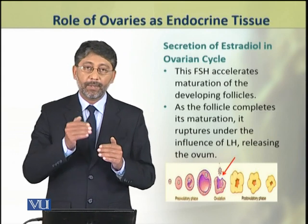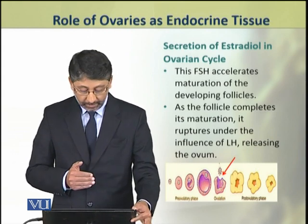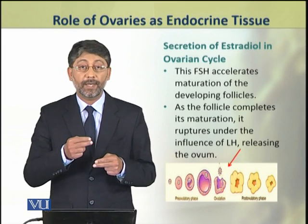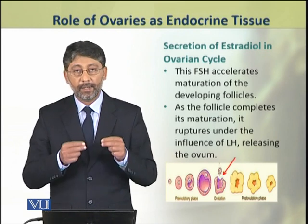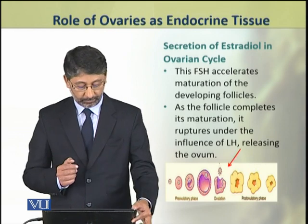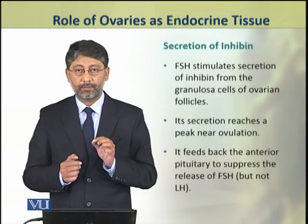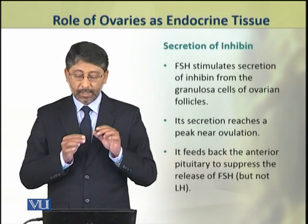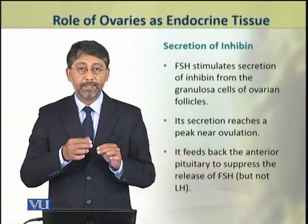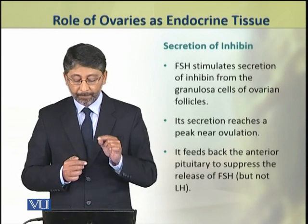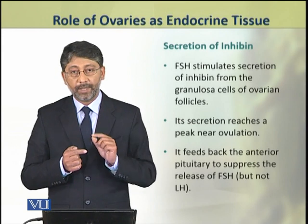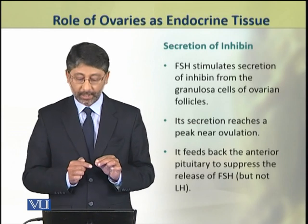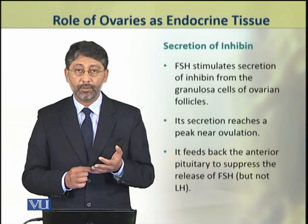When the follicle completes its maturation, it ruptures. This stimulus of rupturing comes from luteinizing hormone, and as a result the egg or ovum is released. When ovulation has occurred, FSH stimulates the secretion of another hormone from the ovary follicles called inhibin. This inhibin is produced by another type of cells in the follicle called granulosa cells.